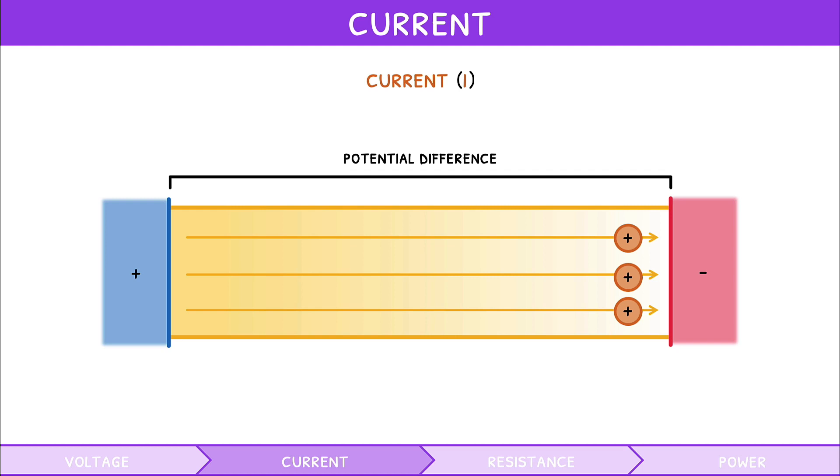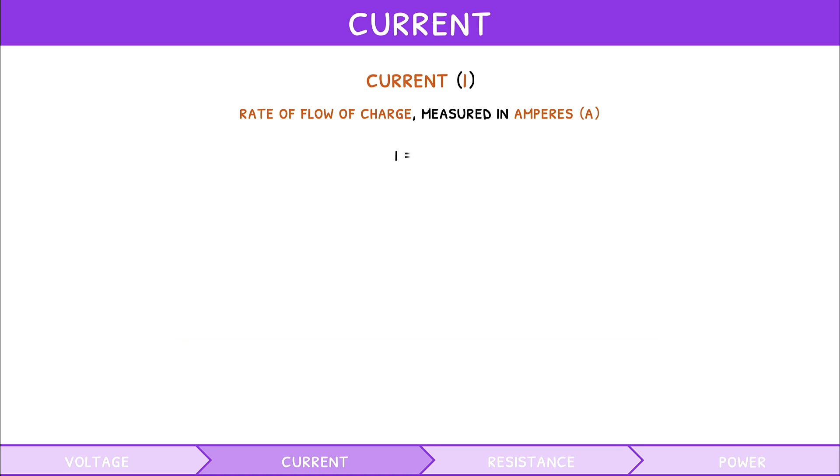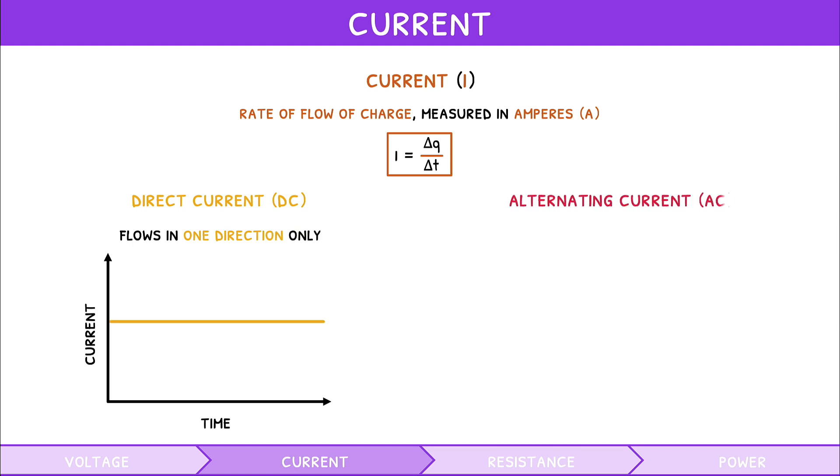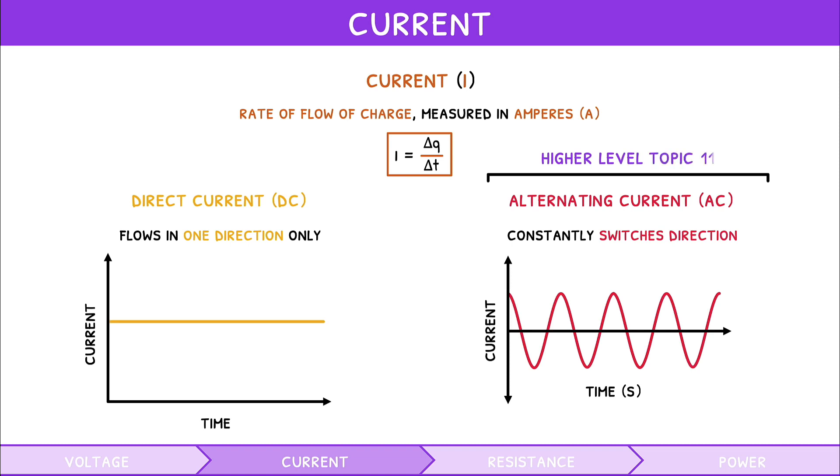Current I is defined as the rate of flow of charge, and measured in Amperes A. The formula for this is current equals change in charge divided by change in time. There are two types of current you need to be aware of. Direct current, known as DC, and alternating current that constantly switches direction. Higher level students will learn more about the generation and use of AC in our Topic 11 video series.